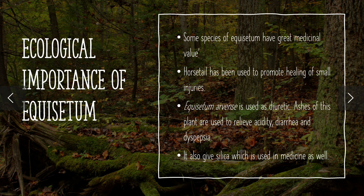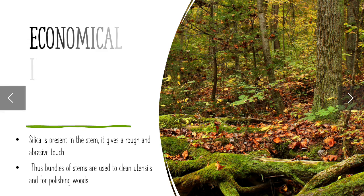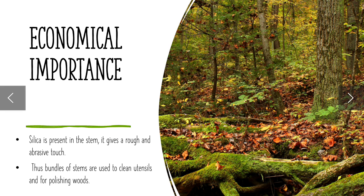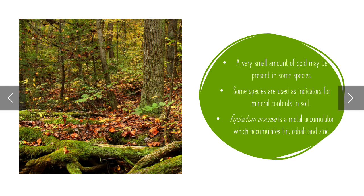Ecological importance of Equisetum: some species have great medicinal value. Horsetail has been used to promote healing of small injuries. Equisetum is used as a diuretic. Ashes of this plant are used to relieve acidity and diarrhea. It also provides silica, which is used in medicine. Silica is present in the stem and gives a rough and abrasive touch. Bundles of stems are used to clean utensils and for polishing wood. A very small amount of gold may be present in some species. Some species are used as indicators for mineral content in soil.